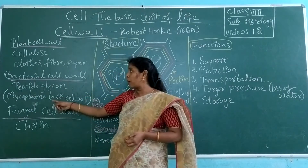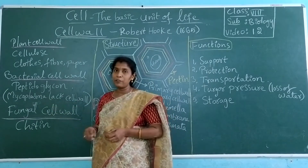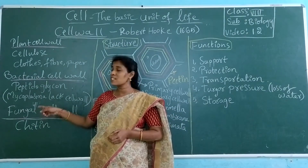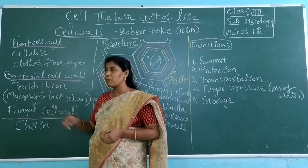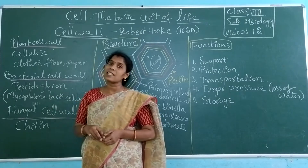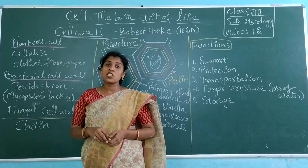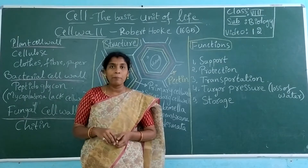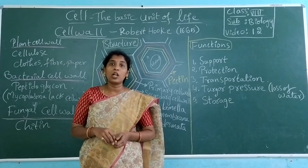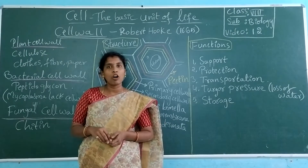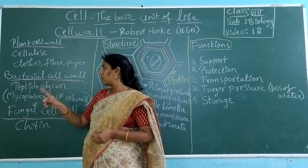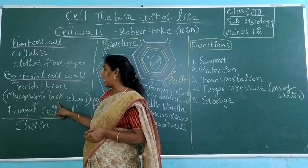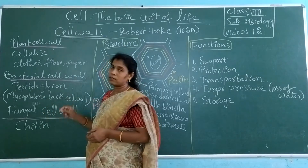However, Mycoplasma — have you heard this name? Yes, Mycoplasma. It is the smallest cell. The smallest cell is Mycoplasma, also known as PPMO — pleuropneumonia-like organism. This organism lacks a cell wall. So does it have a cell wall? No.